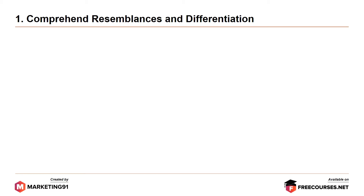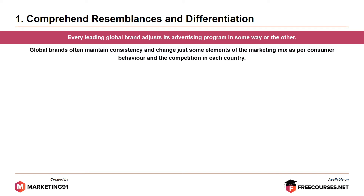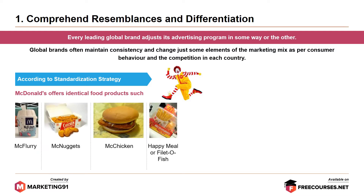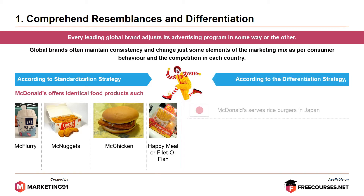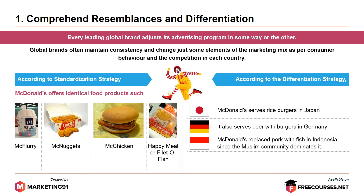Starting with the first commandment: comprehend resemblances and differentiation. Every leading global brand adjusts its advertising program in some way or another. Global brands often maintain consistency and change some elements of the marketing mix as per consumer behavior and competition in each country. For example, McDonald's offers identical products like McFlurry, McNuggets, McChicken, and Happy Meal, but also serves rice burgers in Japan, beer with burgers in Germany, replaced pork with fish in Indonesia due to the Muslim community, and replaced beef with chicken in India.